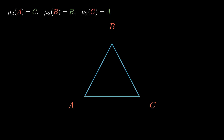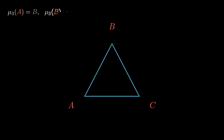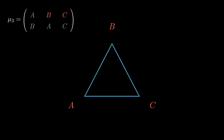The fifth permutation is mu2, which sends A to C, B to B, and C to A. This corresponds to a reflection over the altitude that extends from the top vertex of the triangle. The sixth and final permutation is mu3, which sends A to B, B to A, and C to C. This corresponds to a reflection over the altitude that extends from the bottom right vertex.